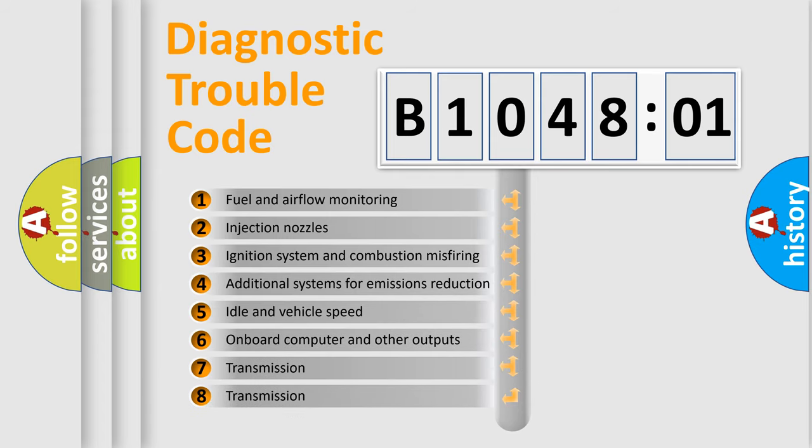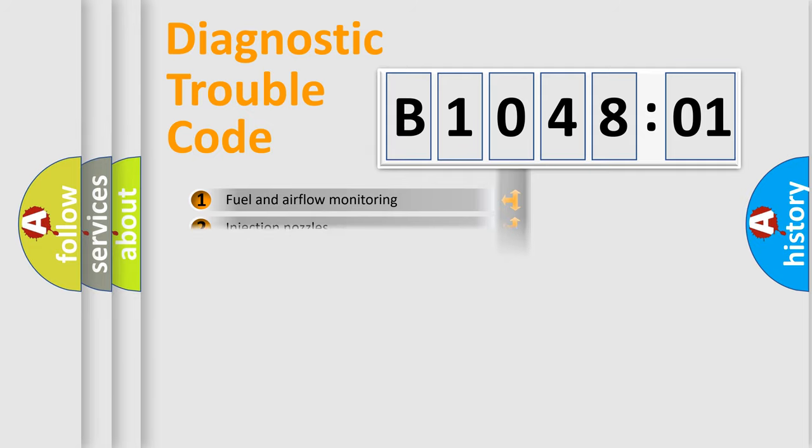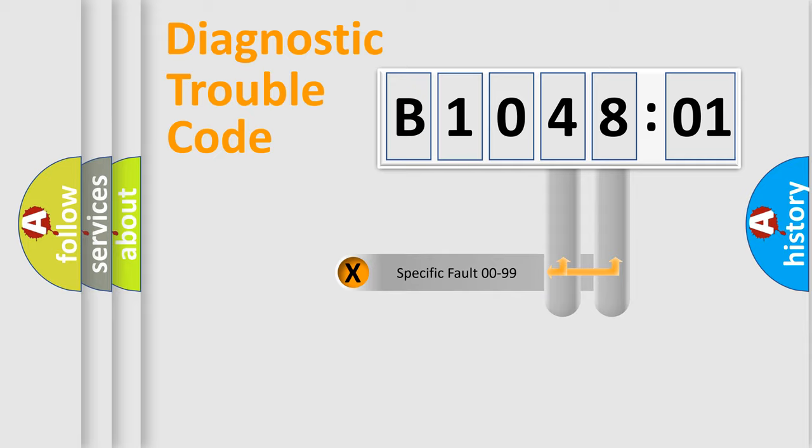The third character specifies a subset of errors. The distribution shown is valid only for the standardized DTC code. Only the last two characters define the specific fault of the group.